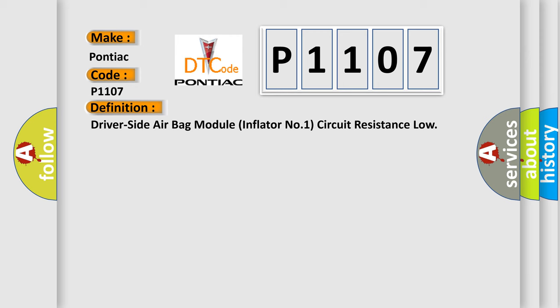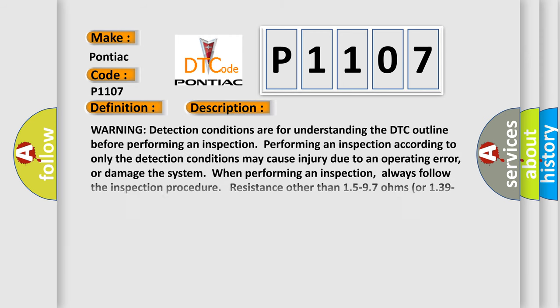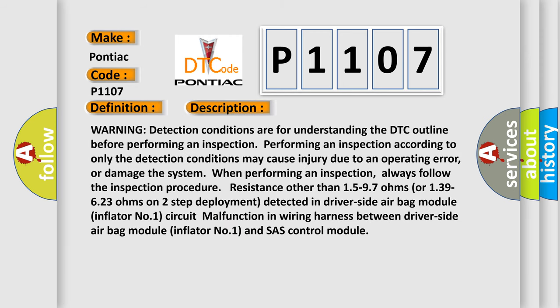Here is a short description of this DTC code. Warning: detection conditions are for understanding the DTC outline before performing an inspection. Performing an inspection according to only the detection conditions may cause injury due to an operating error, or damage the system. Always follow the inspection procedure. Resistance other than 15 to 97 ohms or 139 to 623 ohms on two-step deployment is detected in the driver side airbag module inflator number one circuit — indicating a malfunction in the wiring harness between the driver side airbag module inflator number one and the SRS control module.